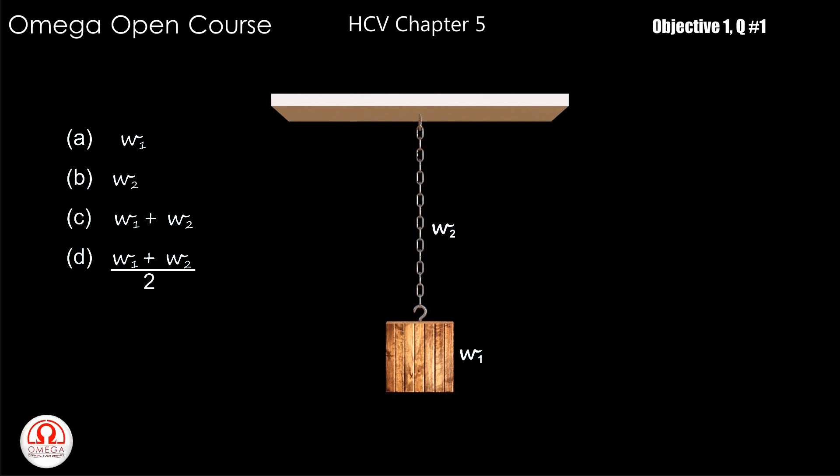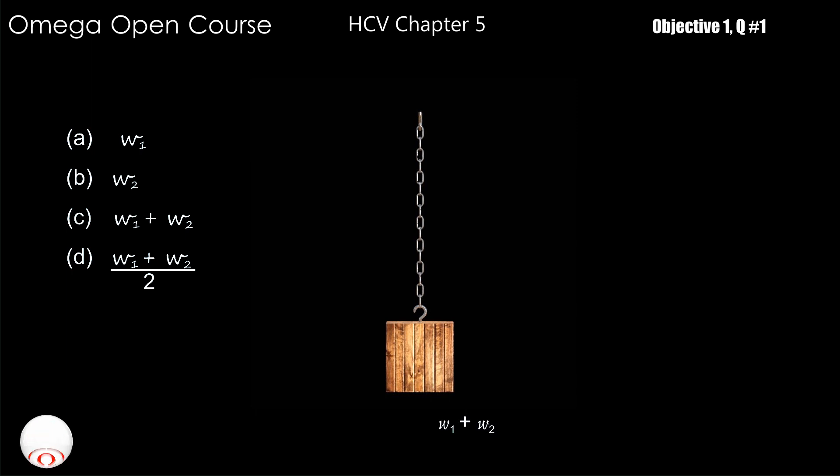Now draw their free body diagram. Gravitational force equal to the weight of the body, which is equal to w1 plus w2, will act in downward direction. The ceiling will apply the force in upward direction to prevent it from falling down.